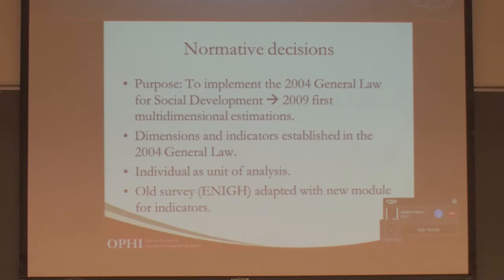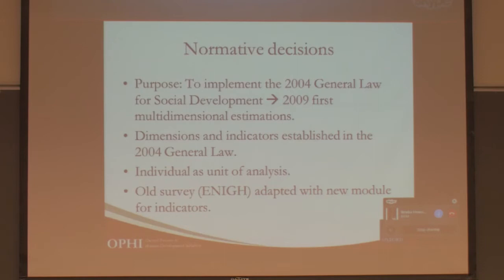It was a 10-year process in which very important normative decisions were made. The first was that dimensions and indicators established in the general law were justified as constitutional rights protected by the constitution for every Mexican. The unit of analysis is the individual, although many of the indicators in the index are built at the household level. Because the general law included indicators for which information was not previously gathered, the income and expenditure household survey was adapted with new questions.